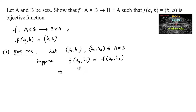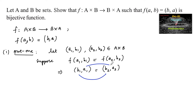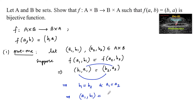This implies (b1, a1) is equal to (b2, a2), since f of (a, b) is (b, a). We know that two ordered pairs are equal only when their corresponding elements are equal, so b1 equals b2 and a1 equals a2. Therefore (a1, b1) is equal to (a2, b2).